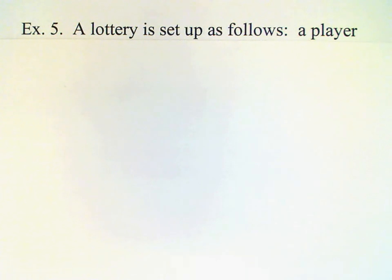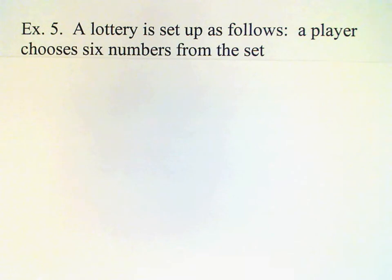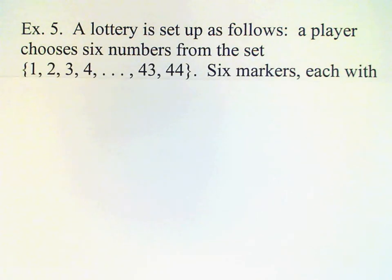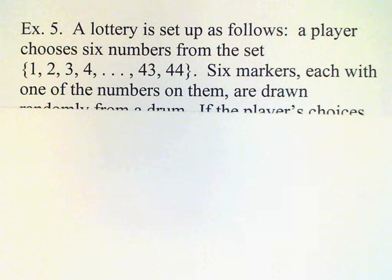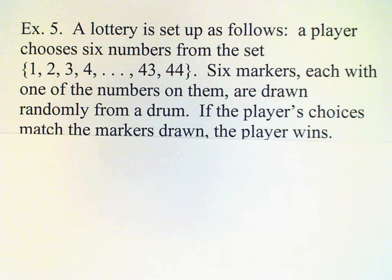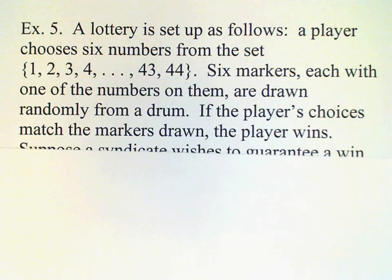The combination number is used in analyzing gambling games, so I'd like to do a couple of examples involving these games. First, we have a lottery set up as follows: a player chooses six numbers from the first 44 counting numbers. Six markers are drawn randomly from a drum, and if the player's choices match the markers, then the player wins.